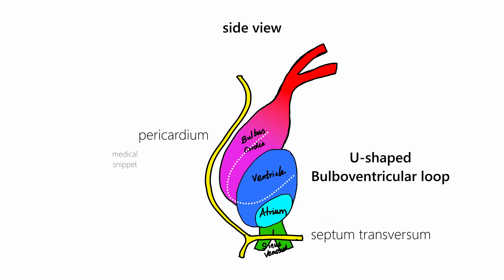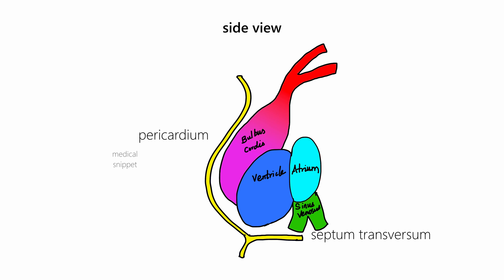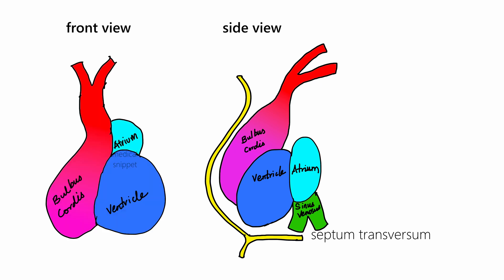The cardiac loop has an ascending limb formed by the bulbus cordis and a descending limb formed by the primitive ventricle. The primitive atrium and sinus venosus get freed from the septum transversum, move upwards, and lie behind the bulbus cordis, truncus arteriosus, and bulboventricular chamber. On expansion, the primitive atrium projects forwards on either side of the truncus arteriosus as auricles.